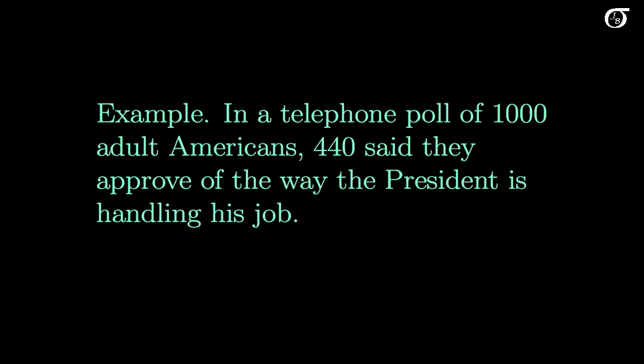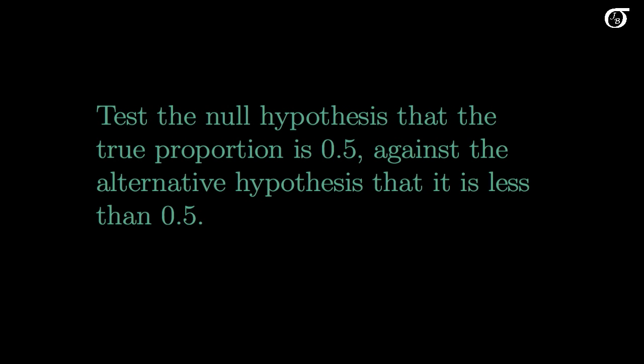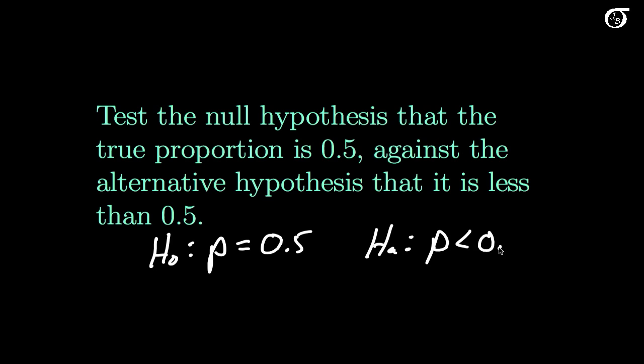Let's go ahead now and do a hypothesis test. So the same example here, we've got our p-hat, as we've worked out before, is 0.44. But let's say there was a value of interest to us that we wanted to test. And something that we might want to test here is to test the null hypothesis that the true proportion p is 0.5. And let's say we thought an appropriate alternative was that it is actually less than 0.5. So we're going to test the null hypothesis that the real value of the population proportion is 0.5, against the alternative hypothesis that it is in fact less than 0.5.